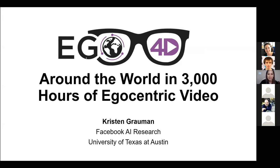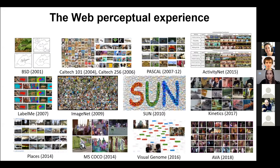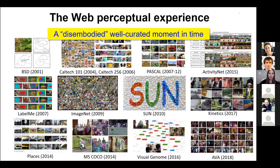Let me get started introducing this massive new dataset and benchmark called Ego4D. This is massive in many ways, including the amount of collaboration that took place to make it possible. The team is listed on our arXiv paper describing this new effort, involving a number of individual researchers from 13 different universities plus Facebook AI.